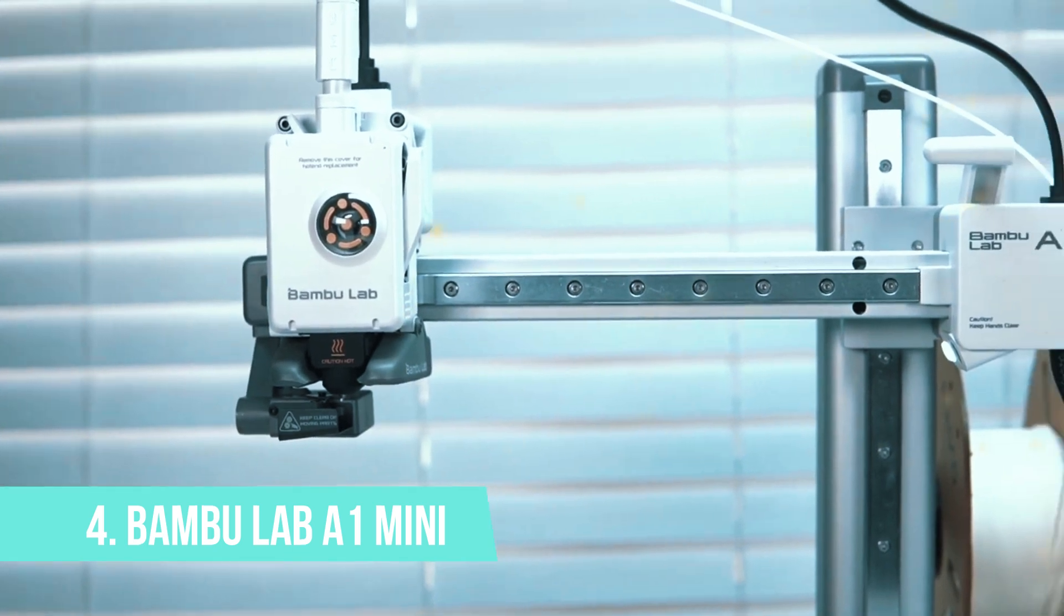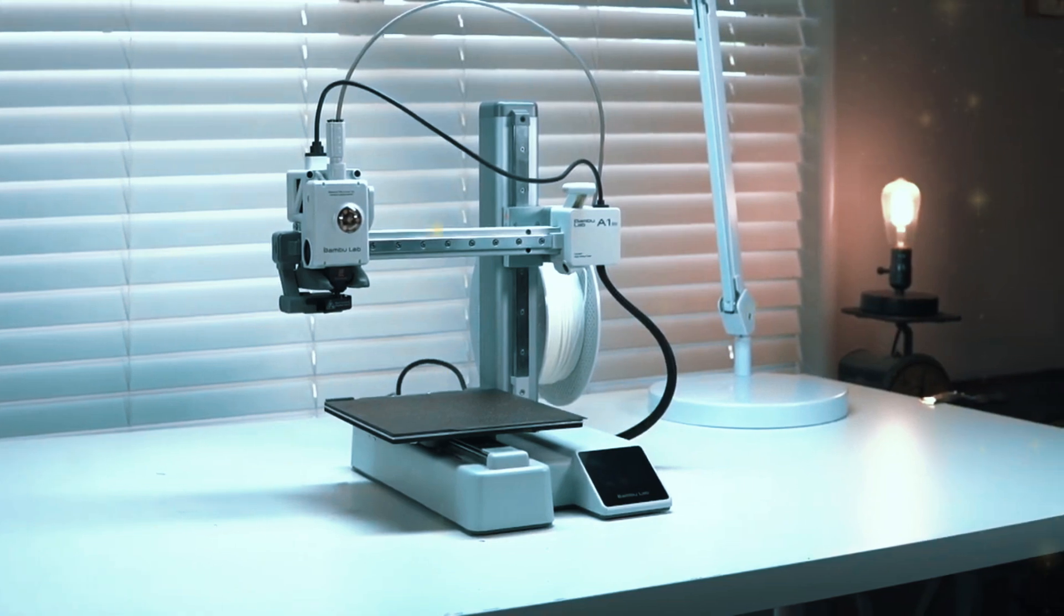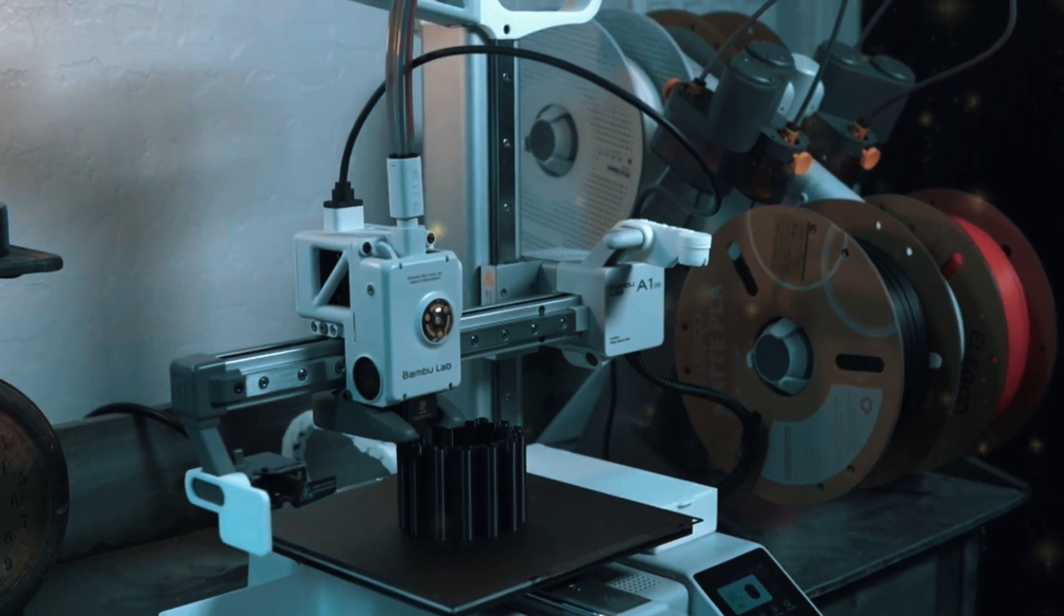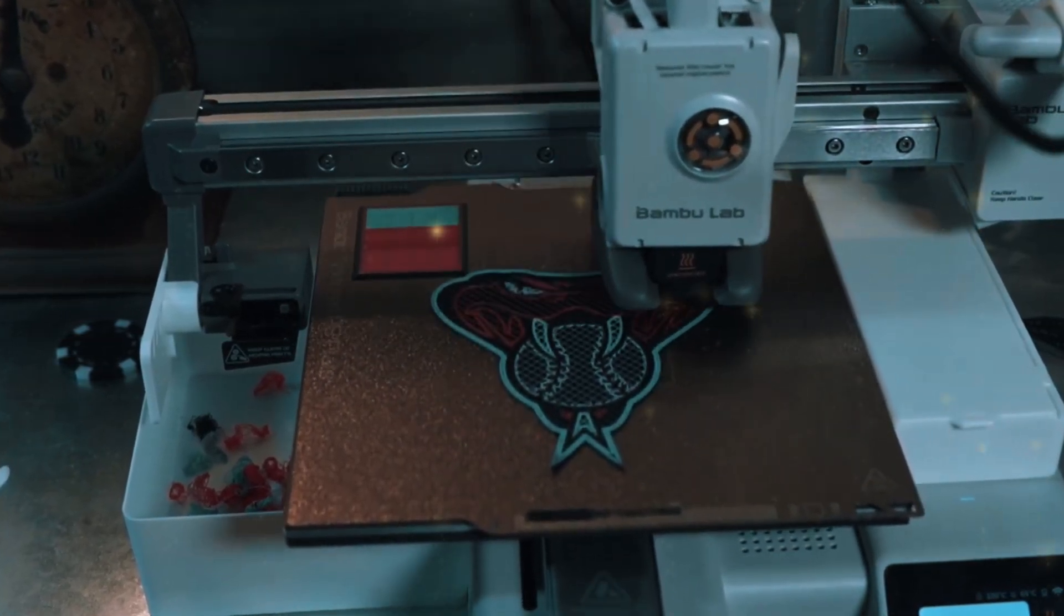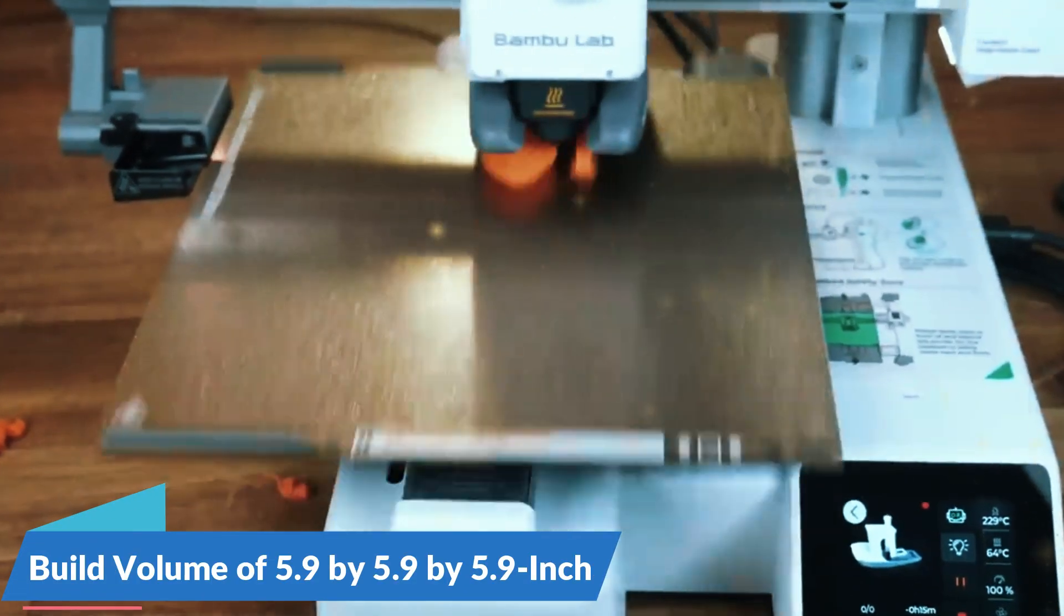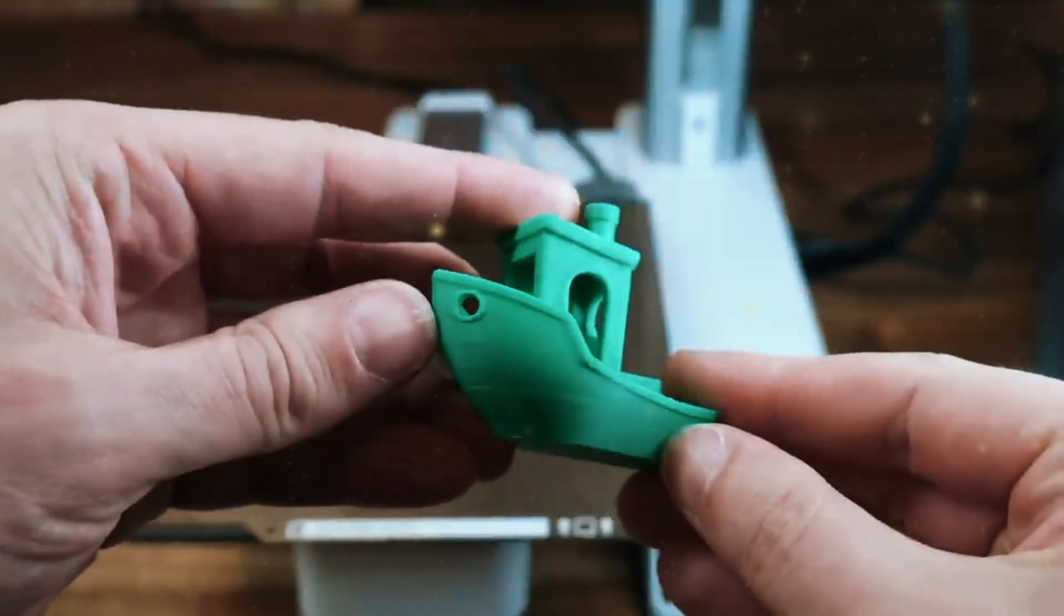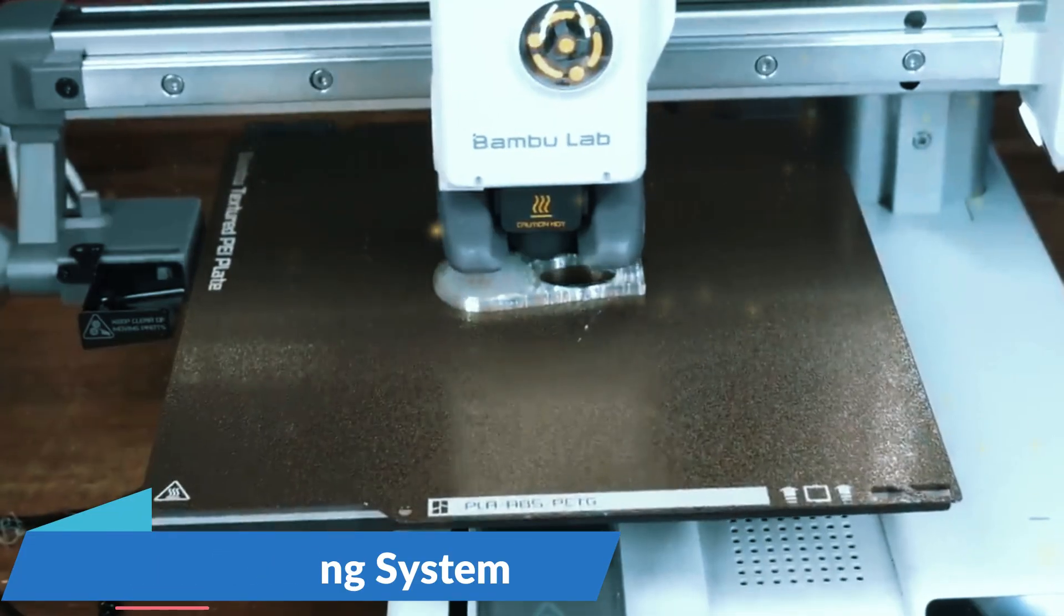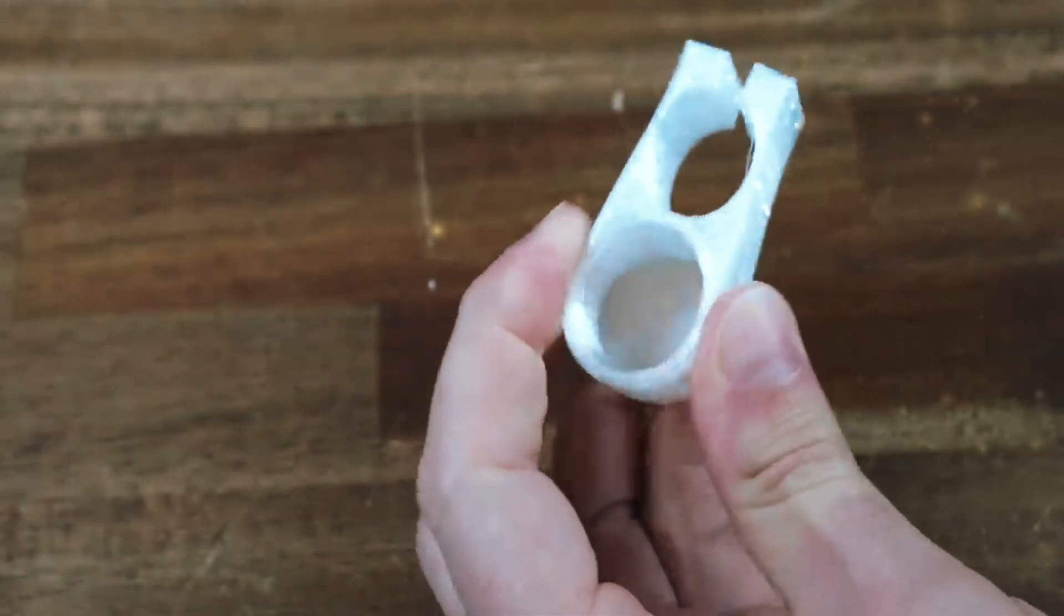Number 4, Bamboo Lab A1 Mini. Next up is the Bamboo Lab A1 Mini, a compact yet powerful 3D printer that's perfect for those with limited space but high expectations. Don't let its small size fool you. This machine packs a punch when it comes to quality and efficiency. The Bamboo Lab A1 Mini features a 5.9x5.9x5.9 inch build volume, making it an ideal choice for creating detailed models, figurines, and small functional parts. One of its key advantages is its auto-leveling system, which ensures that your print bed is always perfectly leveled, resulting in higher-quality prints with minimal effort.